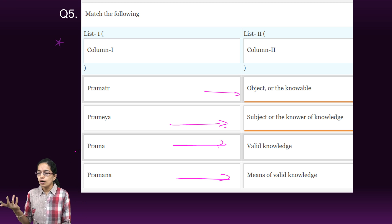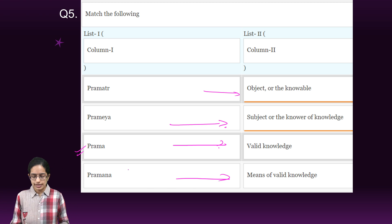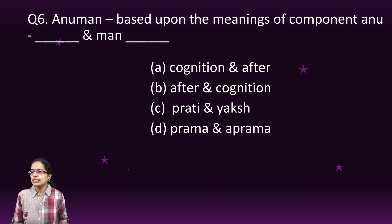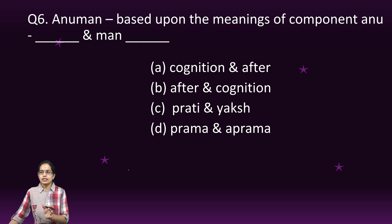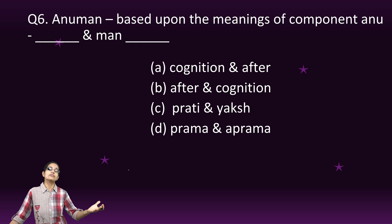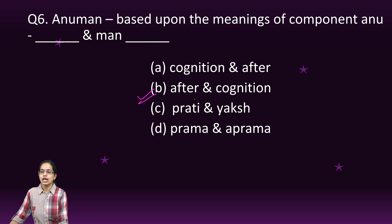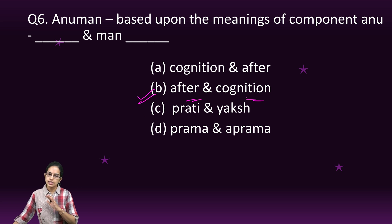Similarly, Prama is valid knowledge, A-Prama is invalid knowledge, and Praman is the means of valid knowledge. Understanding Anuman: it is made up of two words — Anu plus Man. Anu means 'after' and Man means 'cognition,' so it is knowledge derived after cognition. We have already covered a separate lecture on Anuman, so just go back and refer to that concept in detail. The right option here is 'after' and 'cognition.'